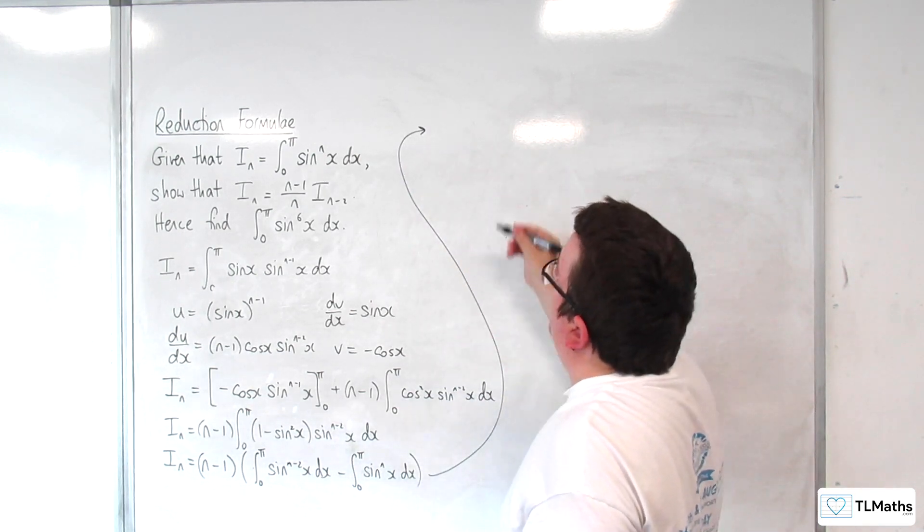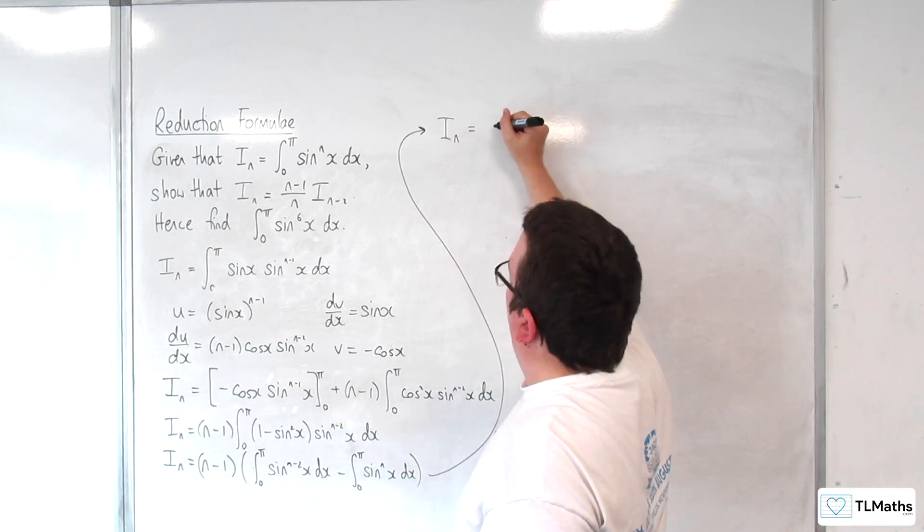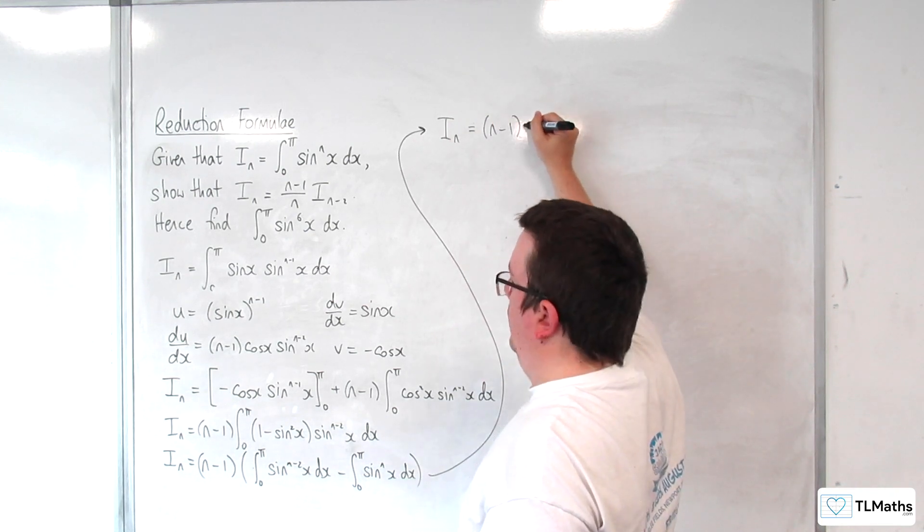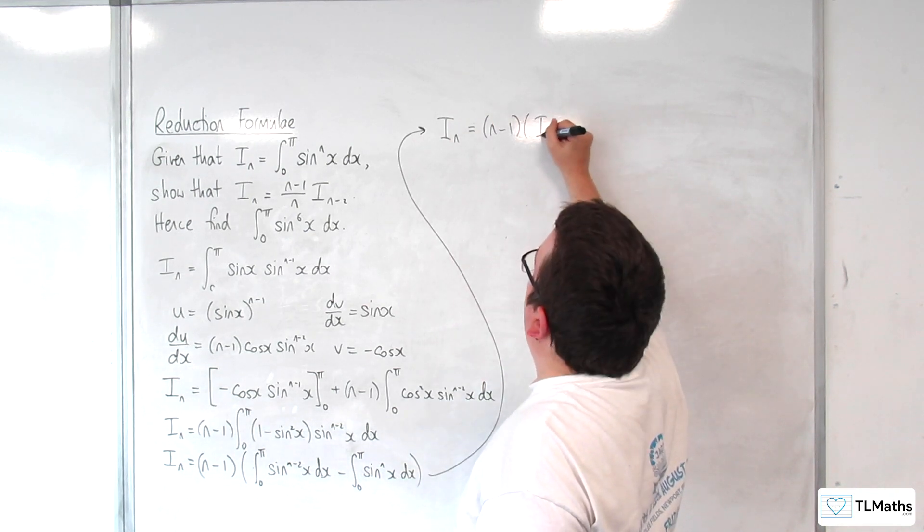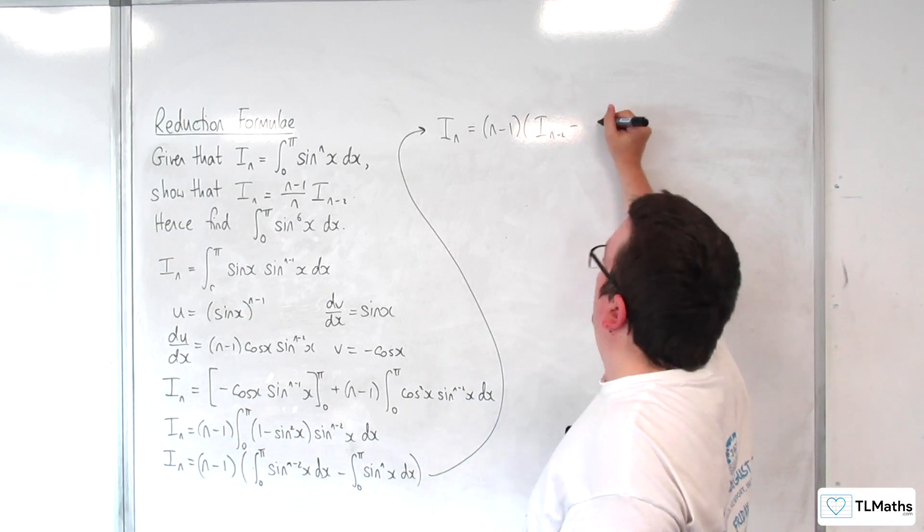Now what I want to recognize here is that that is I_(n-2) and that is I_n. So what I've got here is that I_n equals (n-1) times (I_(n-2) - I_n).